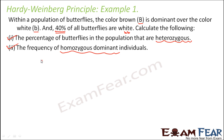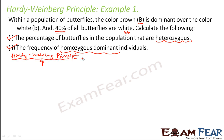Now in this question, what do we know from the Hardy-Weinberg principle? From the Hardy-Weinberg principle, we know two things. First, the frequency of alleles is constant over generations — that is, p plus q is equal to 1. The other equation is p² + 2pq + q² = 1.